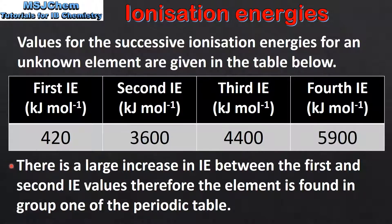There is a large increase in ionization energy between the first and second ionization energy values, therefore the element is found in group 1 of the periodic table. Group 1 elements have one electron in the outermost energy level which requires the least amount of energy to remove. This big increase is due to the fact that the second electron is removed from an energy level that is closer to the nucleus.